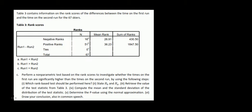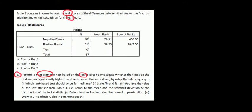Let's have a look at question C in this video. We have the rank score, so we'll have a test with ranks for the 67 skiers. We got the data and we want to perform a non-parametric test based on the rank scores to see whether the times on the first run are significantly higher than the times on the second run.